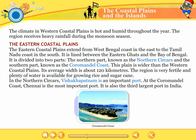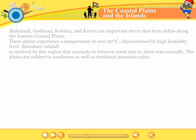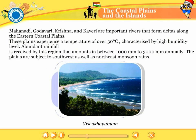At the Coromandel coast, Chennai is the most important port. It is also the third largest port in India. Mahanadi, Godavari, Krishna and Kaveri are important rivers that form deltas along the eastern coastal plains. These plains experience a temperature of over 30 degrees Celsius, characterized by high humidity levels. Abundant rainfall is received by this region, amounting to between 1000 mm to 3000 mm annually. The plains are subject to south-west as well as north-east monsoon rains.